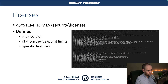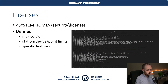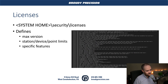Licenses also live in the system home, under security and licenses. The license file has a .license extension but is actually plain text — you can open it in any text editor. It defines things like the maximum version your license covers, station device and point limits, and which specific features are licensed depending on what you've paid for and added to the license.